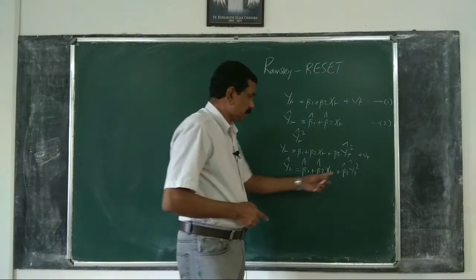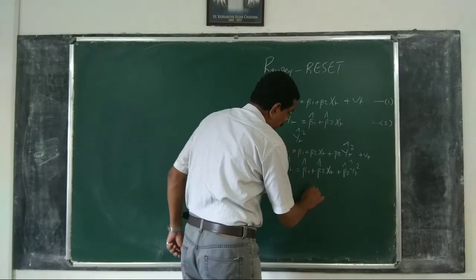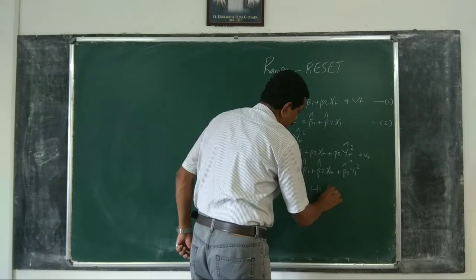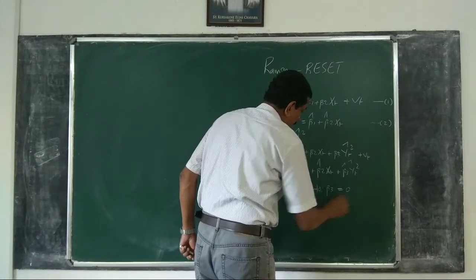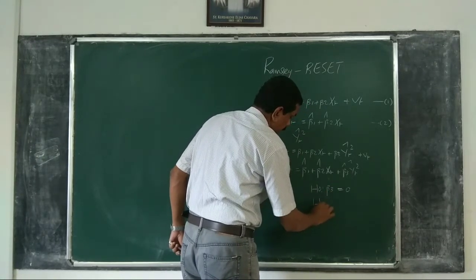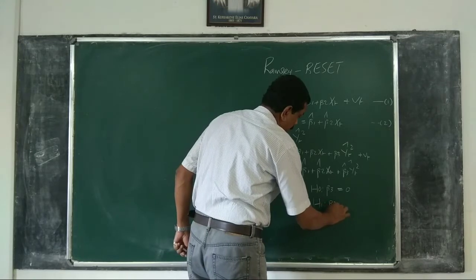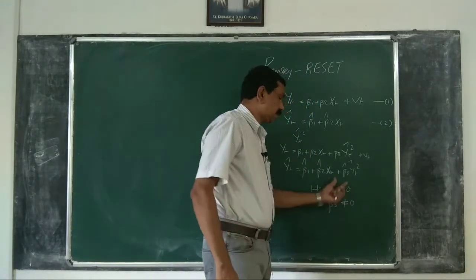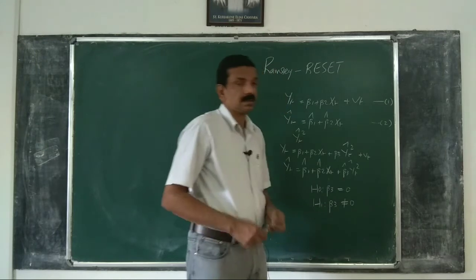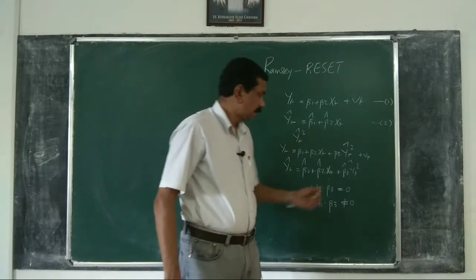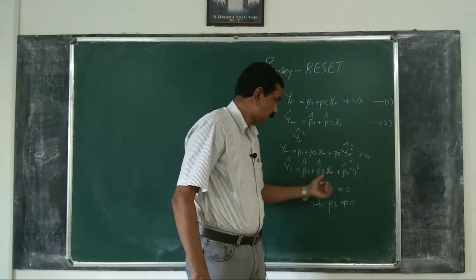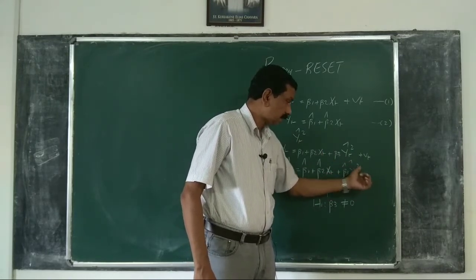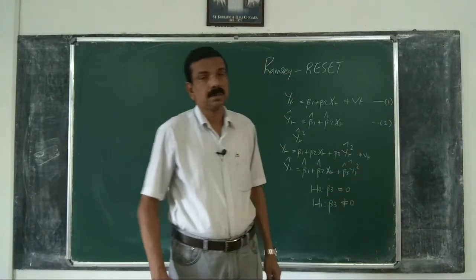Then we test the significance of β₃: the null hypothesis H₀: β₃ = 0 versus H₁: β₃ ≠ 0. If this null hypothesis is rejected, it means that in addition to Xt, Ŷt² should also be included in the model.